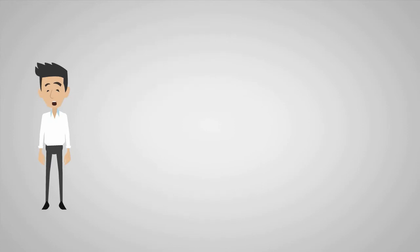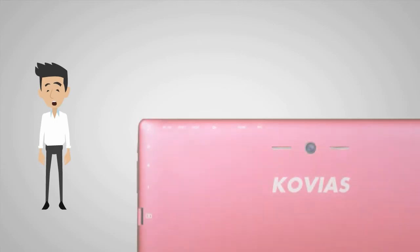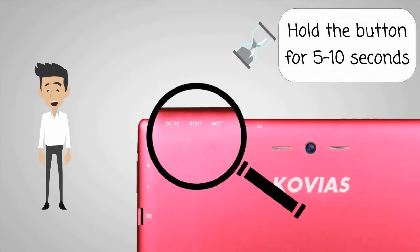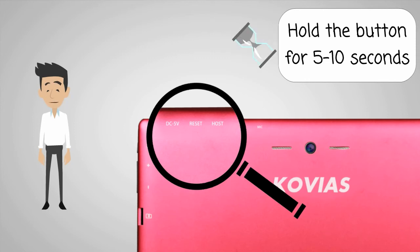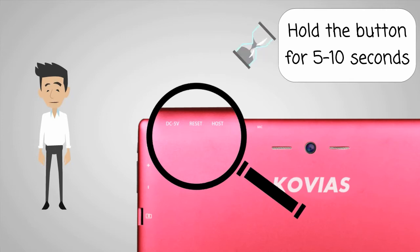Next, locate the reset button. You will need something small and thin to press it with — a straightened out paper clip or a pin will work just fine. Press and hold the button for 5 to 10 seconds. Your tablet will turn off. Release the reset button and then press and hold the power button to turn your tablet on as you normally would.